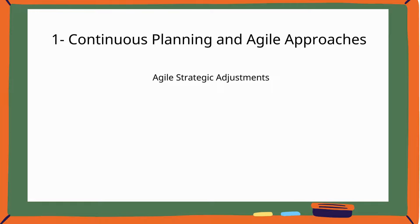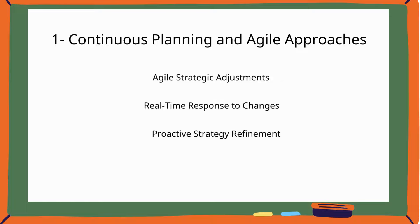This is particularly relevant in a landscape where scientific evidence, regulatory guidelines, and stakeholder expectations are constantly evolving. Agility in planning means medical affairs can respond quickly to unexpected challenges such as new competitor data, changes in treatment guidelines, or sudden shifts in patient preferences. Instead of waiting for the next planning cycle, adjustments can be made in real time. For instance, if new real-world evidence emerges that impacts a product's value proposition, medical affairs can swiftly pivot their strategy to focus on generating and communicating new insights.